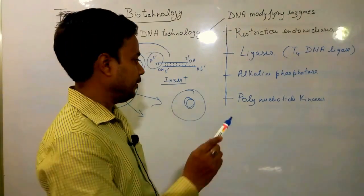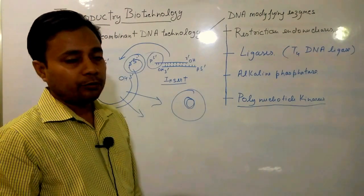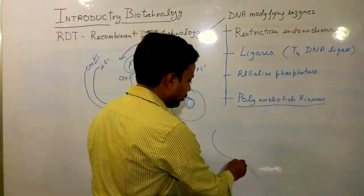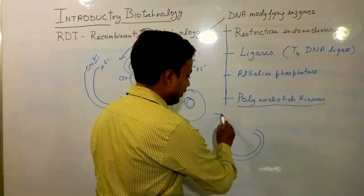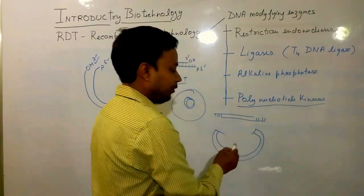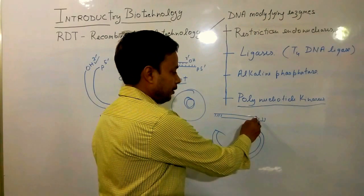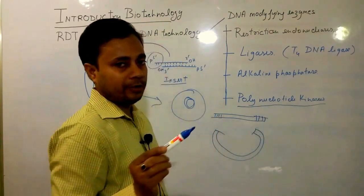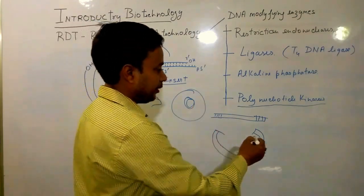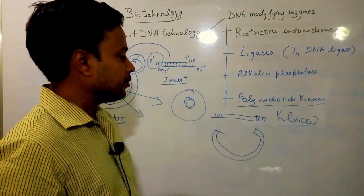Polynucleotide kinase is an enzyme used for the addition of phosphate groups at DNA ends. This is needed in cases where the vector has a blunt end and the insert has a cohesive end — polynucleotide kinase introduces phosphate groups at these ends, acting as an end-filling enzyme. The Klenow fragment, which is part of DNA polymerase I, is another enzyme also used for end filling.